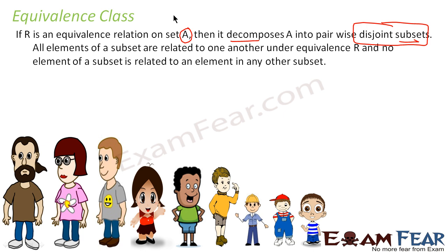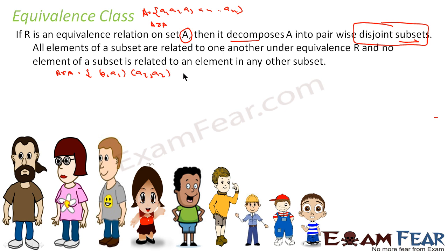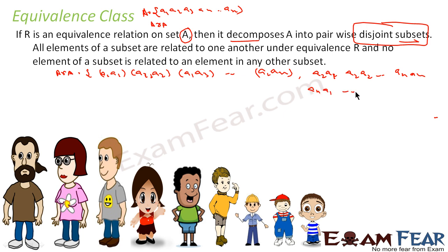What I mean to say is, if you have a set A which has elements A1, A2, A3, A4, and so on, then when you find A cross A, you will get pairs like (A1, A1), (A1, A2), (A1, A3), and so on — all possible ordered pairs.